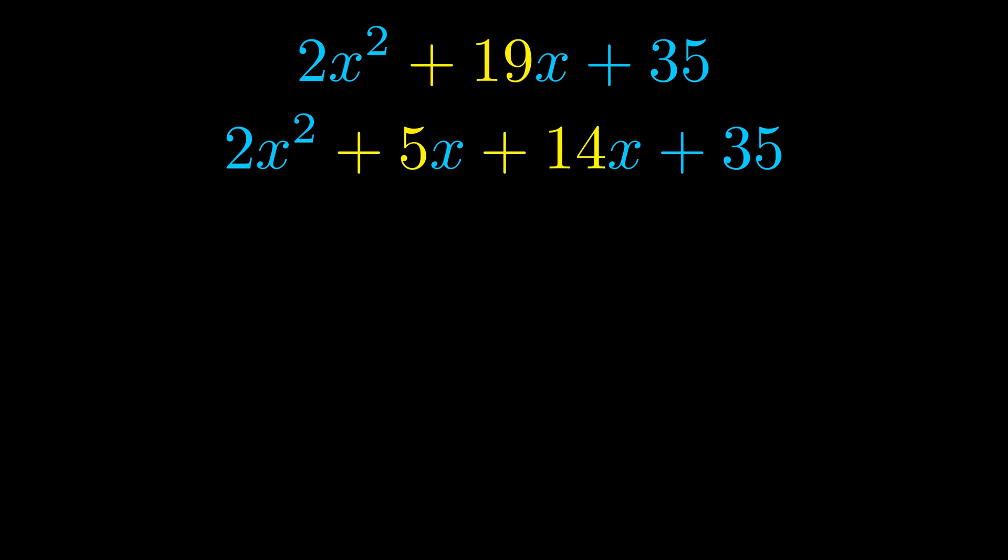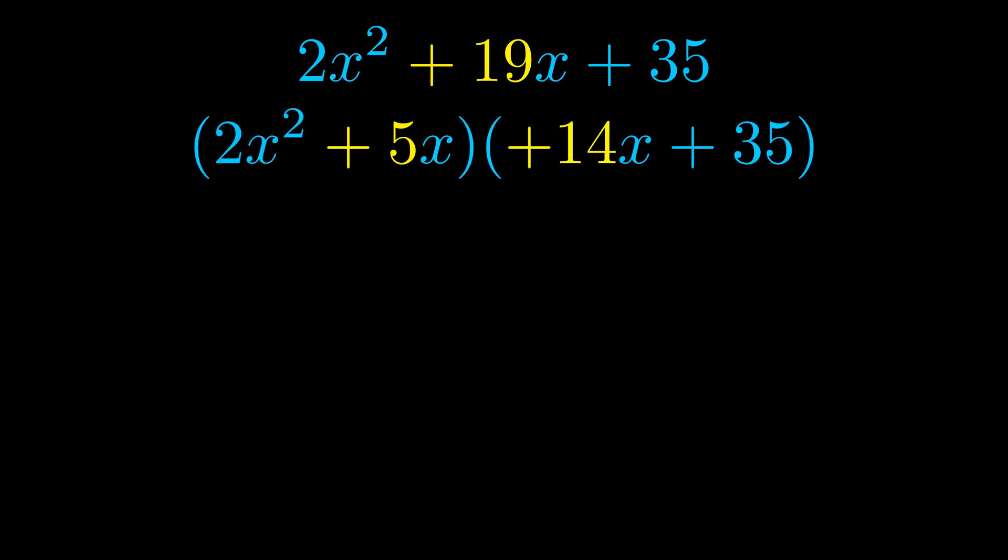Once we've done this, we go ahead and put parentheses around the first term and the last term. And we do that so that we can take the greatest common factor out of both terms. We can see the greatest common factor is now outside in green. Notice also how what remains inside of the parentheses is the same in both cases.